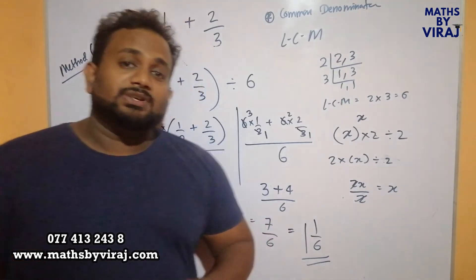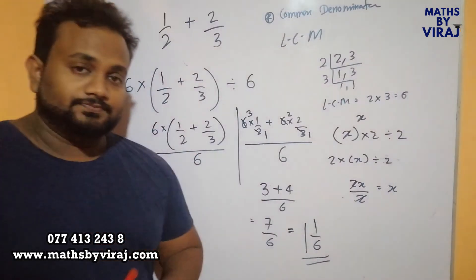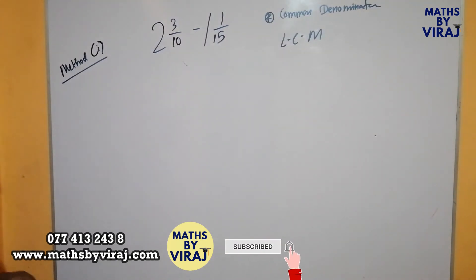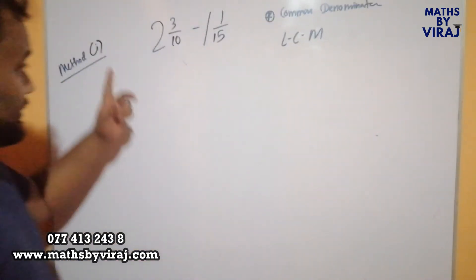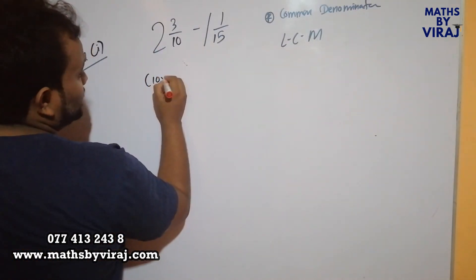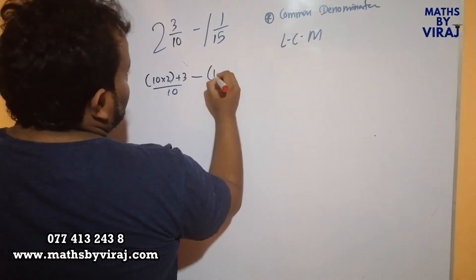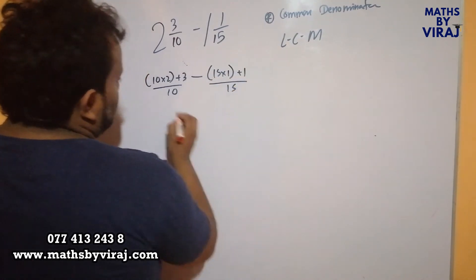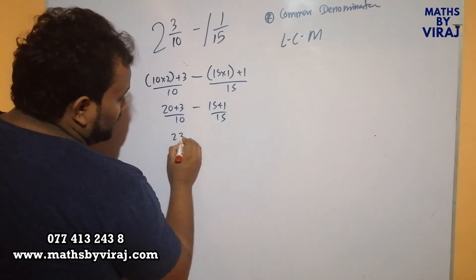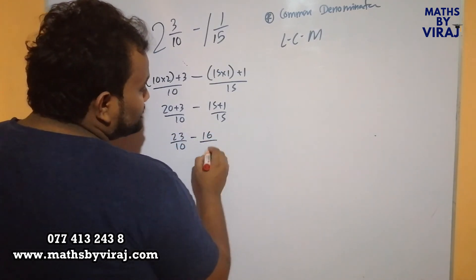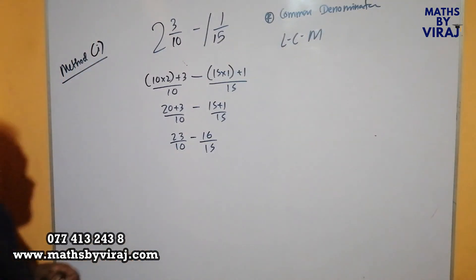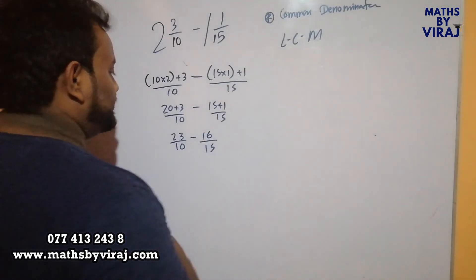So it's up to you to decide whether to do a sum in method 1 or method 2. Right children, now I have used 2 mixed fractions where they are subtracted from one another and they have different denominators. First I am going to convert both of them into improper fractions. 10 is multiplied by 2, to that I add 3 over 10, minus — 15 is multiplied by 1, plus 1 over 15 — which is 20 plus 3 over 10, minus 15 plus 1 over 15. That is 23 over 10 minus 16 over 15. Now you see that the denominators are different, so we have to come to a common denominator using LCM.